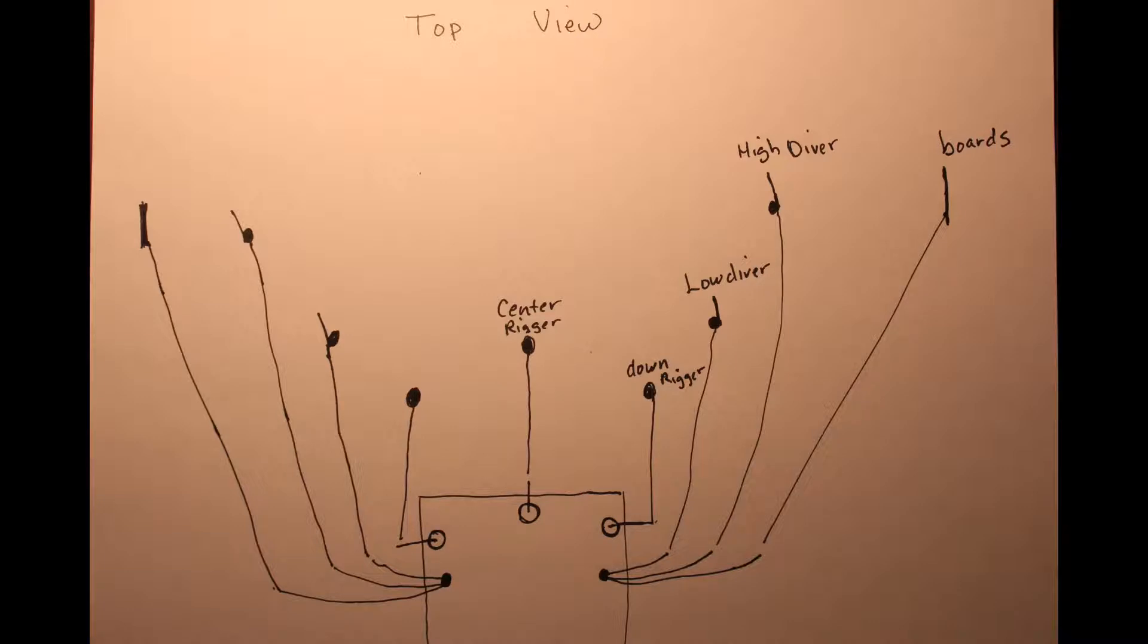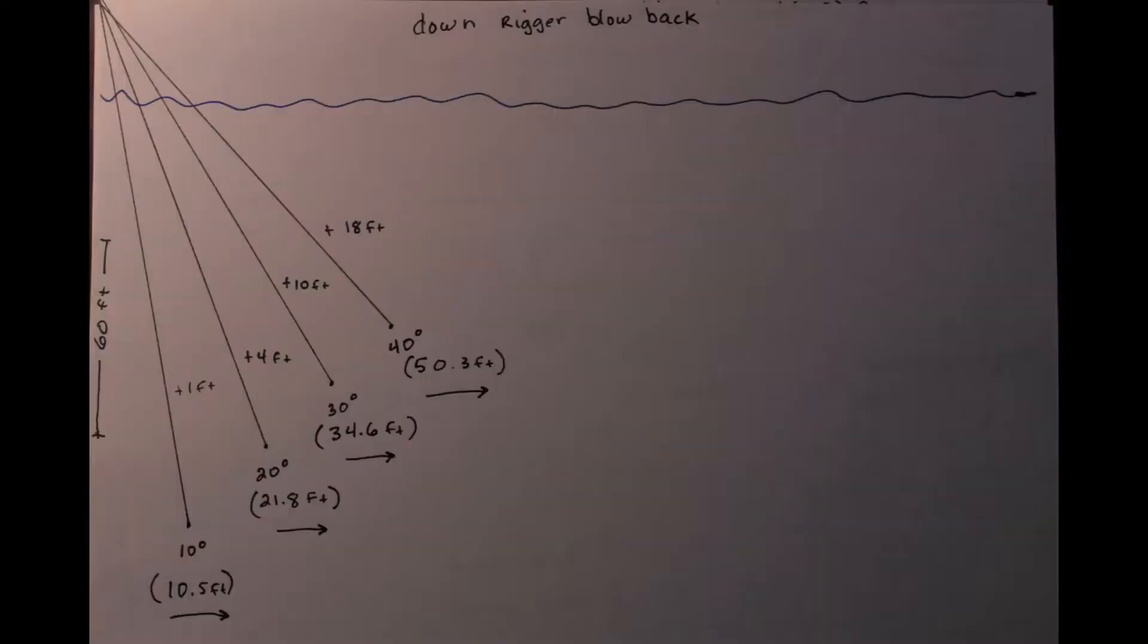This chart shows you how much blowback you have at 60 feet deep, according to how much cable angle you're observing from your back deck. So if you're looking out at your downrigger cable and it's going back into the water at a 40 degree angle, you can expect about 50 feet of blowback to the ball where your lure's attached, or the cable just above the ball, depending on how you do it. And then at 30 degrees you've got about 35 feet, 20 degrees you've got about 20 feet, 10 degrees you've got about 10 feet. That's what it shows there.